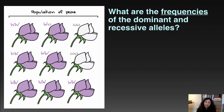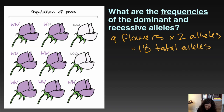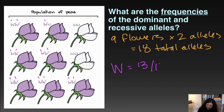Let's practice calculating frequencies. For a flower example, there are 9 flowers, and since each flower has two alleles, that's 18 total alleles. Counting the dominant big W alleles gives us 13, so the dominant frequency is 13 over 18. That means the recessive little w is 5 over 18. We should simplify those to decimals.